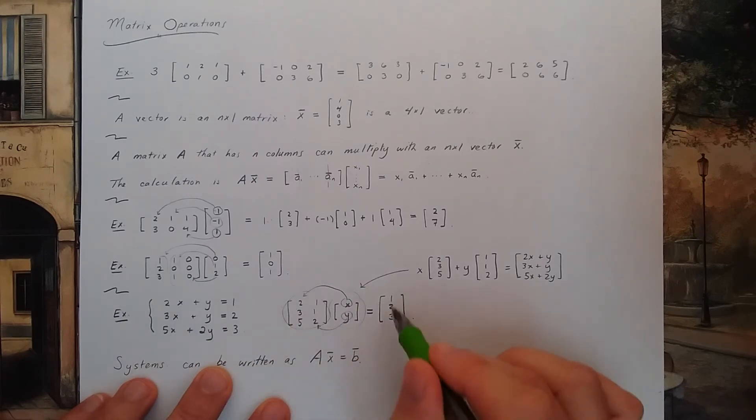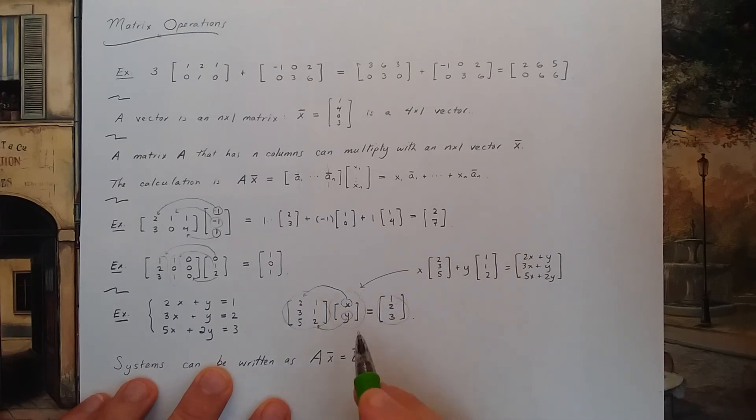And b, this vector here, is a vector that's known, usually constants. And the goal is to find the solution, find the x variable in this equation.